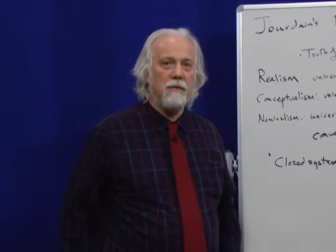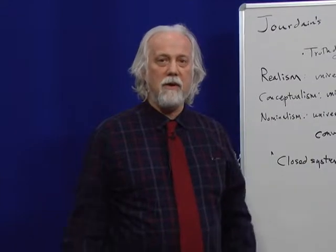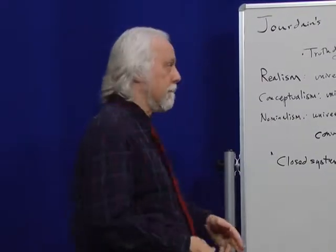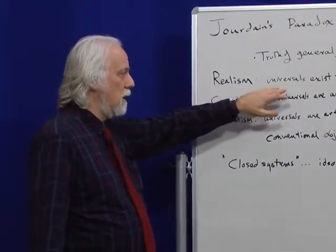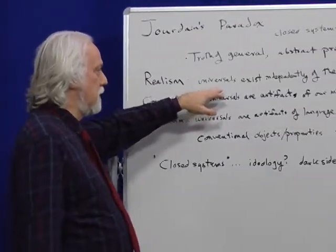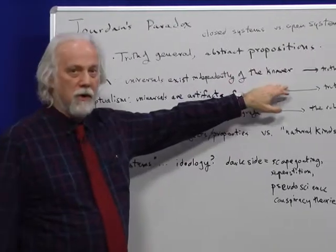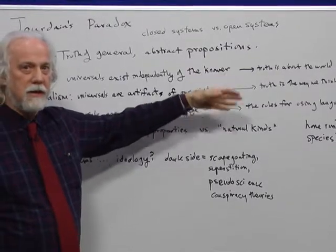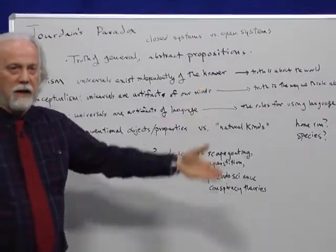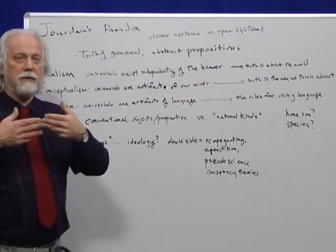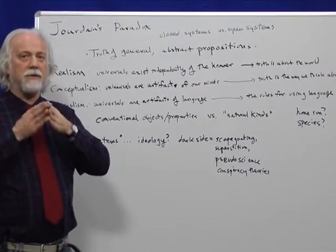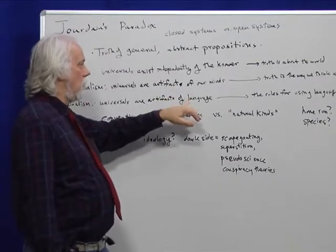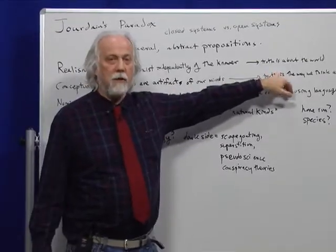If you get back to the whole controversy about universals — what do universals in language actually point to? A realist, such as Plato or Bertrand Russell, says universals exist independently of the knower. Things such as roundness, redness, mathematical truths, logical truths — those general abstract truths exist outside of the mind of the knower. In other words, we discover them; we don't invent them.